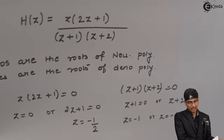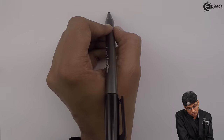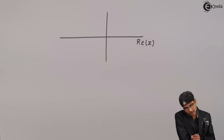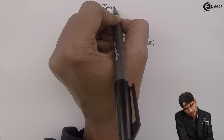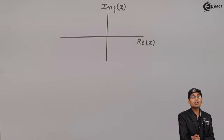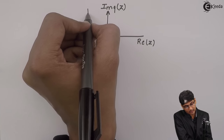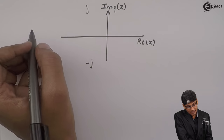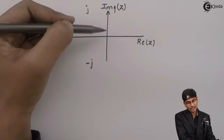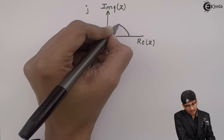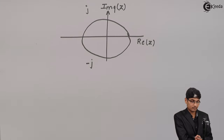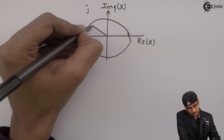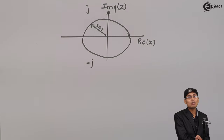Let us take all the numbers and plot on a z-plane. The z-plane has an x-axis called the real part of z and a y-axis called the imaginary part of z, written as j. On the x-axis we have all real values and on the y-axis we have imaginary values. The z-domain always works with circles, and there is a very important circle called the unit circle whose radius is equal to 1.